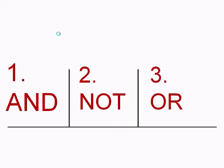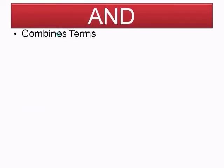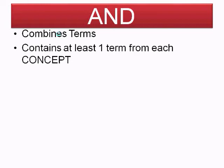Let's get started with the AND function. We will use this to narrow down a search by combining terms, which means retrieving only those references containing at least one term from each concept that you specify exactly.